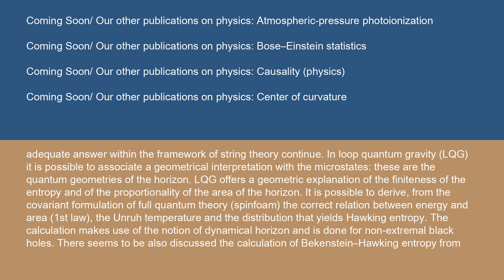In loop quantum gravity (LQG), it is possible to associate a geometrical interpretation with the microstates. These are the quantum geometries of the horizon. LQG offers a geometric explanation of the finiteness of the entropy and of the proportionality of the area of the horizon.